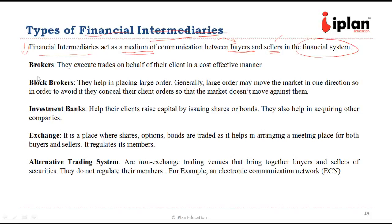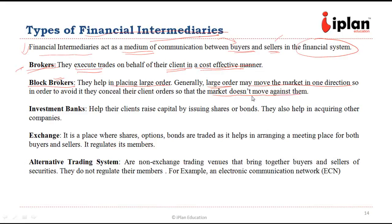The first kind of financial intermediaries are brokers. Brokers generally do not take their own positions; they simply execute trades on behalf of their clients in a cost-effective manner. Then there are block brokers, who usually execute large orders. The main objective is to reduce the market impact cost, because generally if the order is very large it can move the market in one direction. So block brokers discreetly send orders so that market impact cost is minimum.